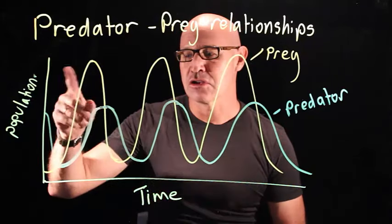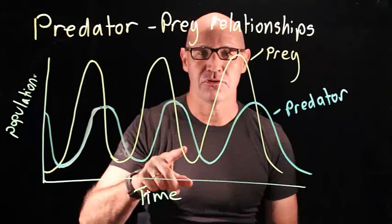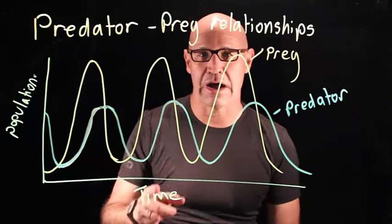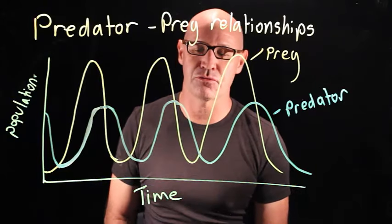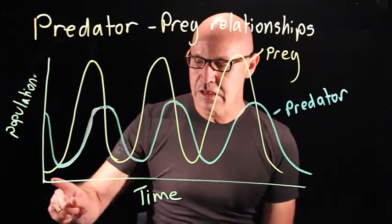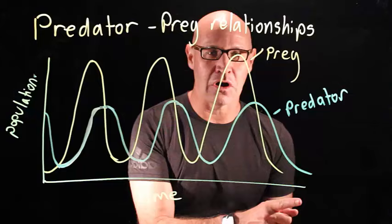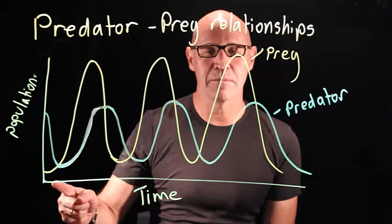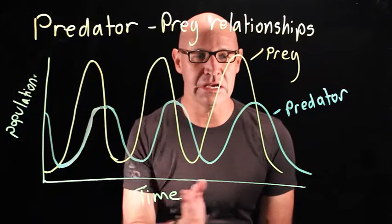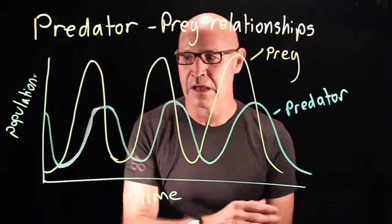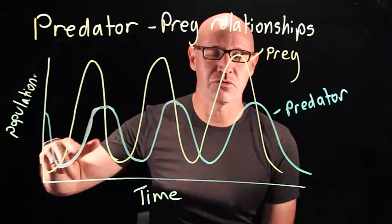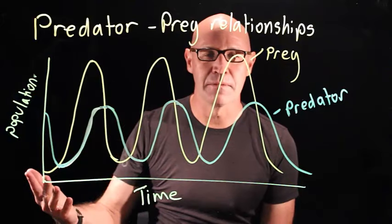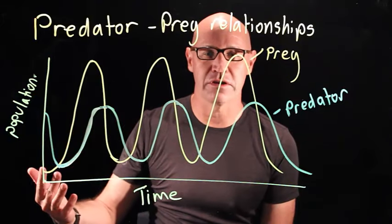I'm going to show you each of the graphs or the traces and we'll see how they're interrelated. Down here we've got time, and this time is usually in years. And here we've got our population, or the number of organisms.